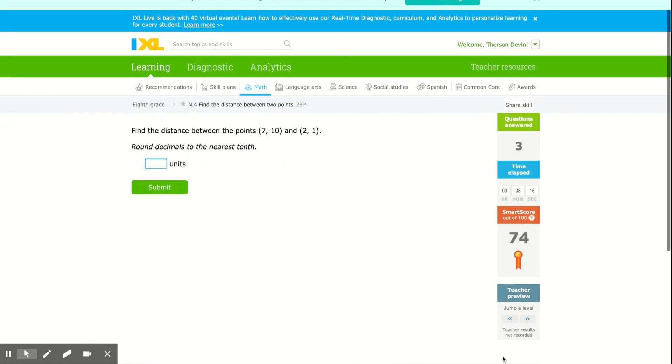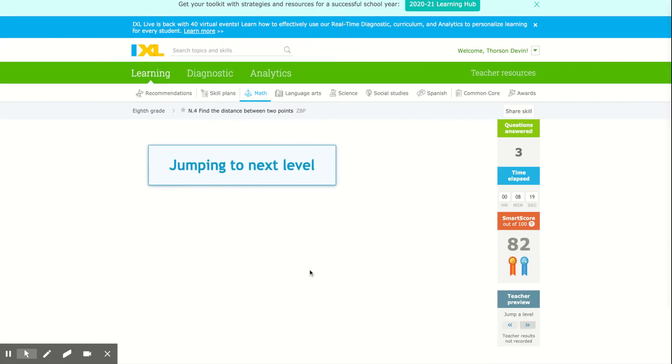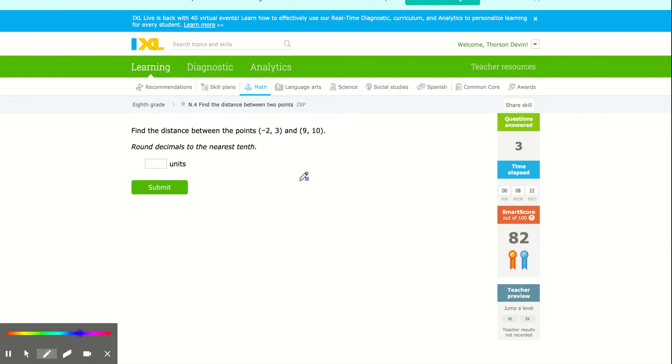Once you start this process, it will go fairly quickly. Sometimes I don't even draw the triangle. I just ask, how far away are the x values from each other? To go from -2 past 0 all the way to 9, that's 11 units. That's my horizontal distance. I'm going to square that and add it to my vertical distance. What's the distance between my y values? Between 3 and 10 is 7. So 11 squared is 121, 7 squared is 49. I add those together, I get 170.